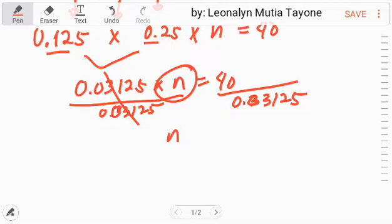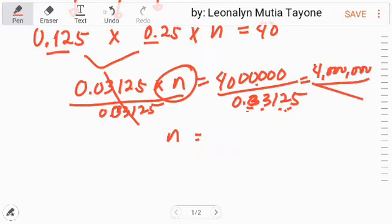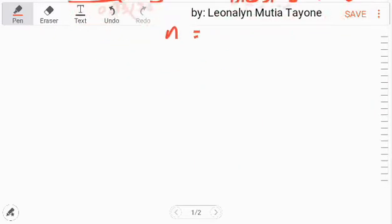To make this easier, how many decimal places is this? 1, 2, 3, 4, 5. So 1, 2, 3, 4, 5, we add zeros. This becomes a whole number. That's 4 million - 1, 2, 3. So 4 million divided by 3,125.